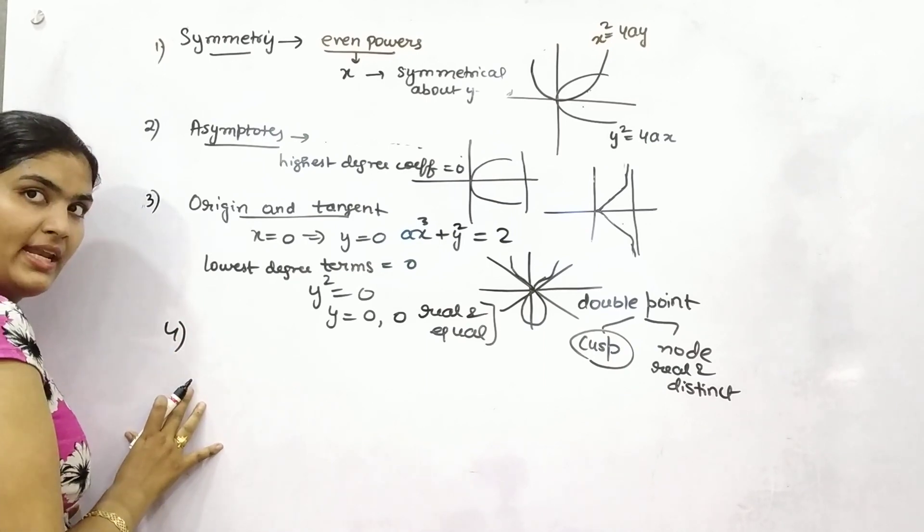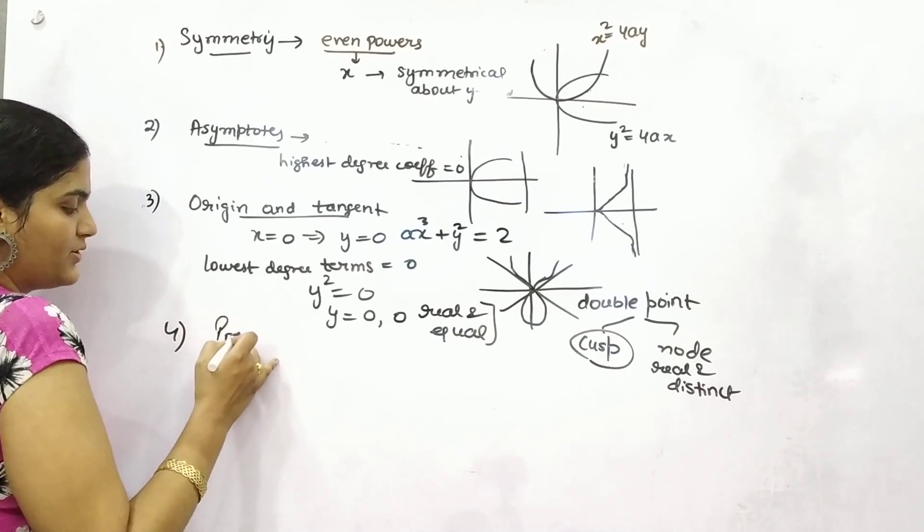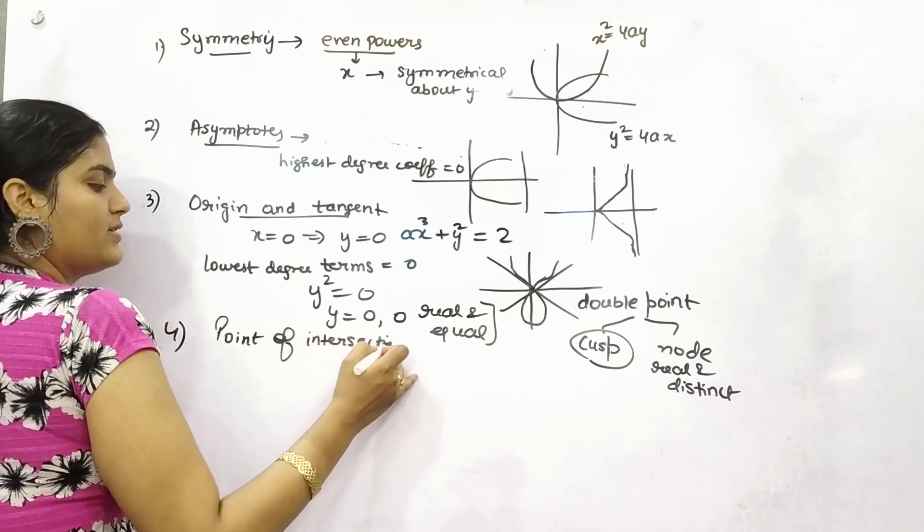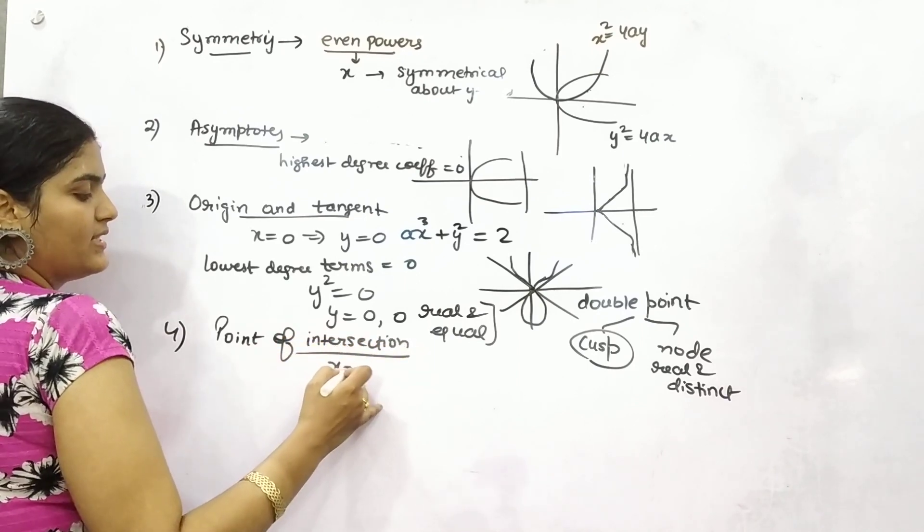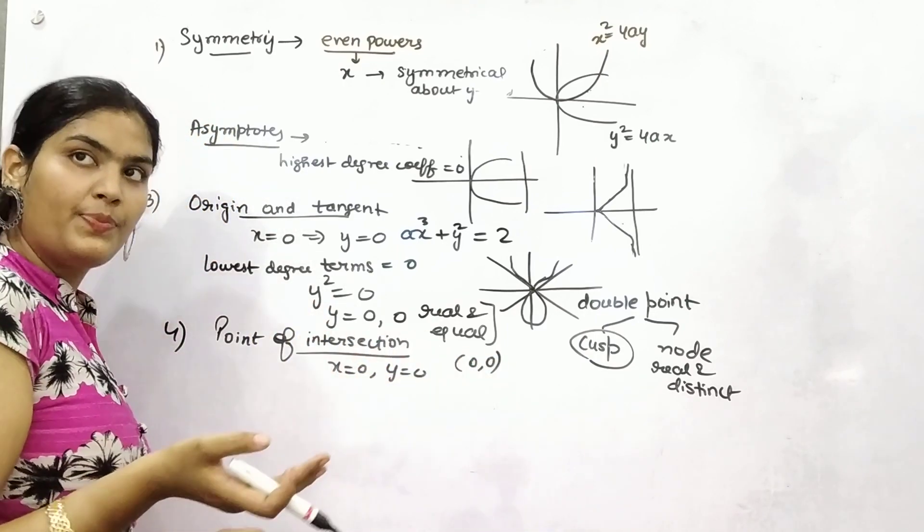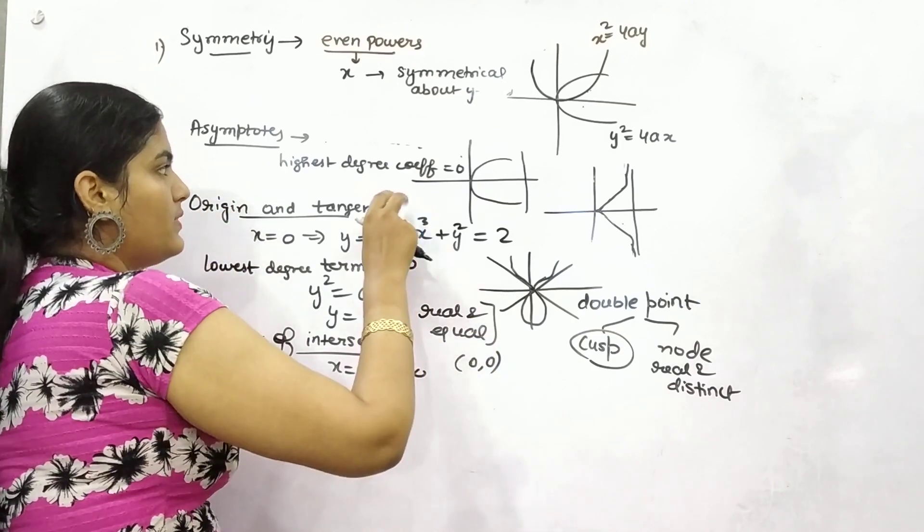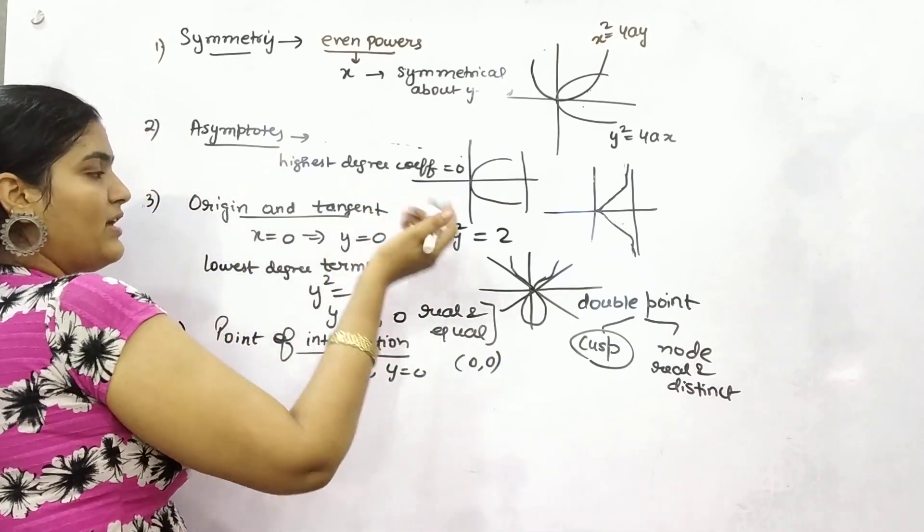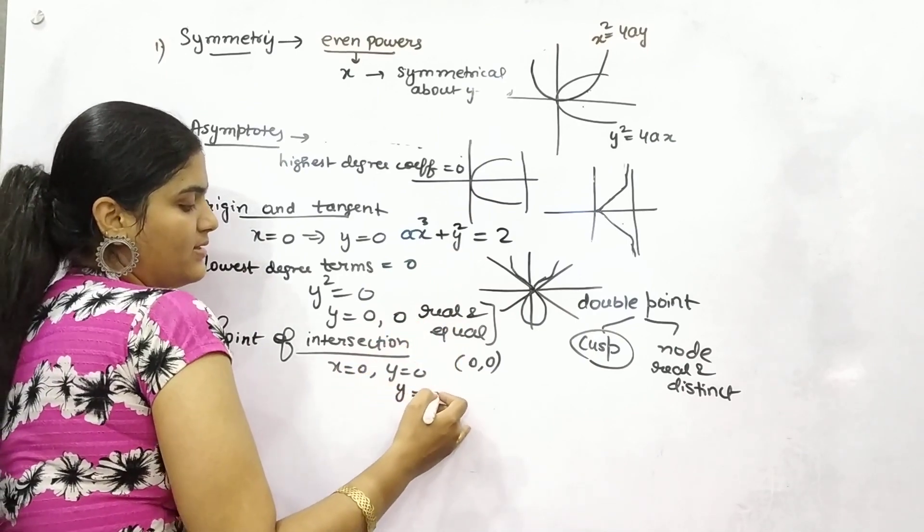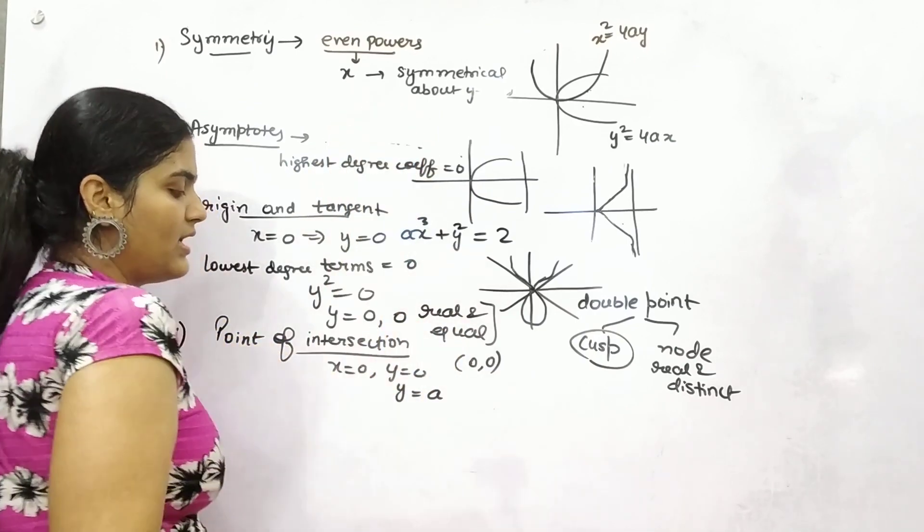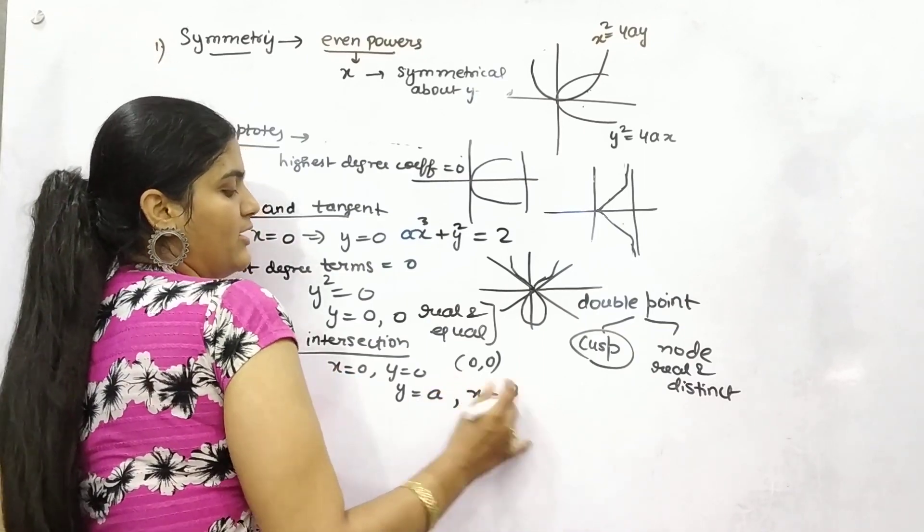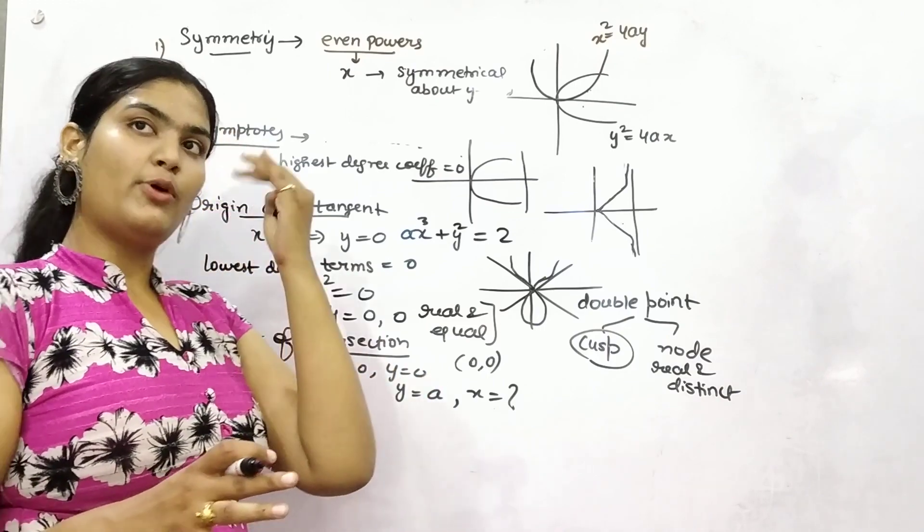Thereafter, you need to find out point of intersection. Start from origin - put x as 0 and if y is 0, then your intersection point is (0,0). Consider your asymptote as well. Let's say your asymptote came as y = a. Then put it into the equation and find out the value of x, then find the point of intersection.